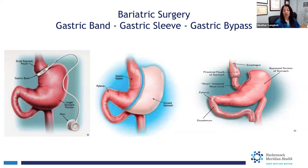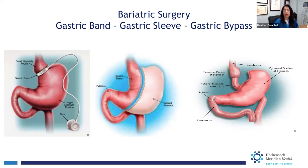Lastly, we have the gastric bypass, which is the most involved of the three. With the gastric bypass, we make a smaller stomach by dividing it and leaving just a small stomach pouch. We then connect that stomach pouch to the small intestines, and there are therefore two small intestine connections.